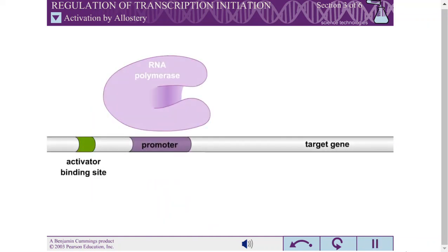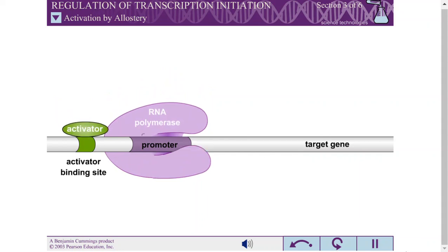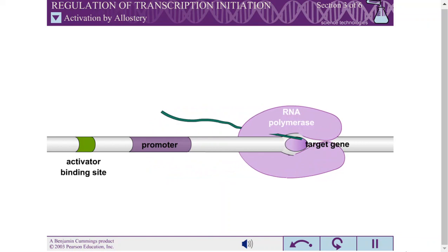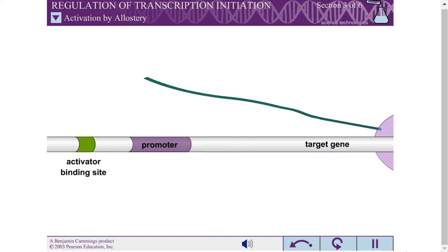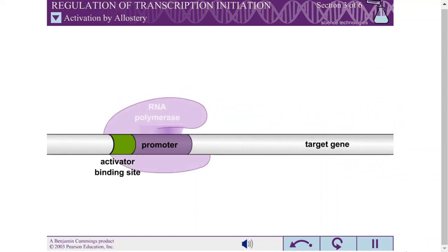Some activators that act by allostery induce a conformational change in RNA polymerase, while others induce a conformational change in the promoter DNA.